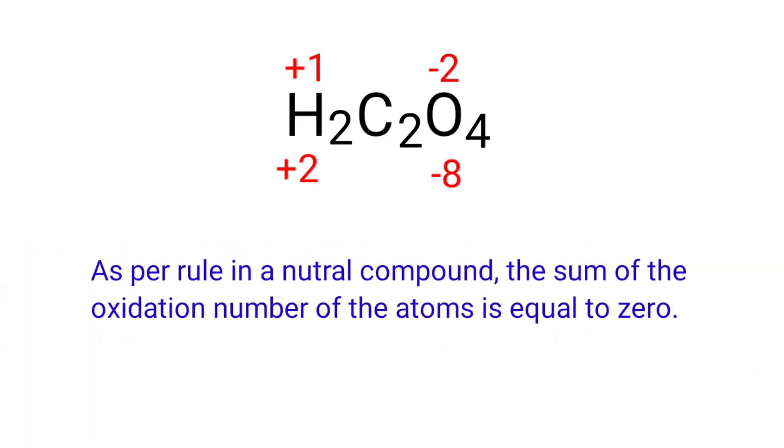As per the rule, in a neutral compound the sum of the oxidation numbers of the atoms is equal to zero. So the numbers along the bottom must add up to zero. Therefore, the number under C2 must be +6.